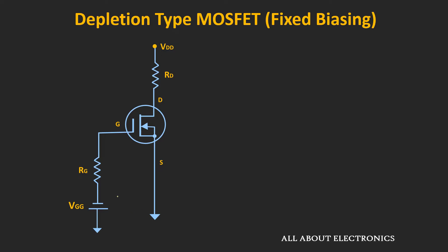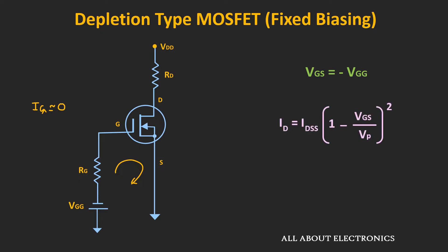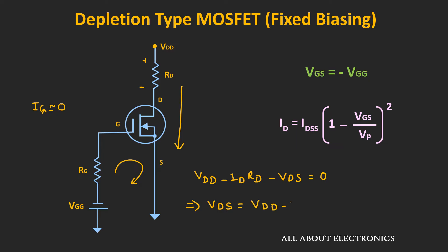In the fixed bias configuration, a fixed voltage is applied at the gate terminal. Since the gate current Ig is approximately equal to zero, applying KVL in the gate loop gives VGS equal to minus VGG. For the active region, the drain current Id is given by Shockley's equation. The typical values of IDSS and VP are known, so by substituting VGS we can find Id. Applying KVL on the output side: VDD minus Id times RD minus VDS equals zero, so VDS equals VDD minus Id times RD.